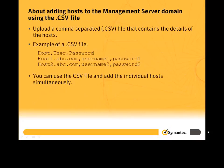You can also upload a comma-separated file that contains the details of the hosts. The first line in the CSV file must appear exactly as shown. You can replace the subsequent lines with the fully qualified host name, user name, and password as shown in the example. You can use the CSV file and add individual hosts simultaneously.